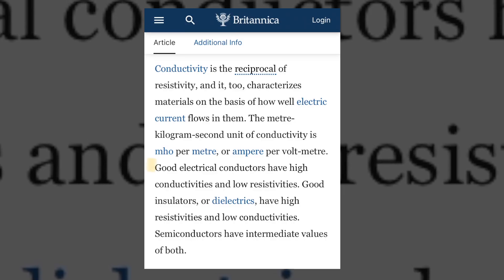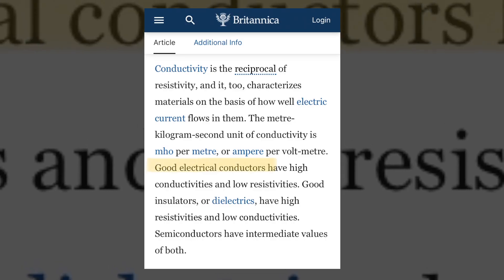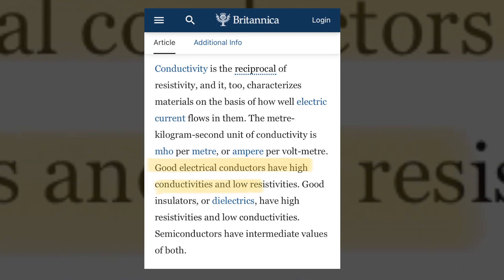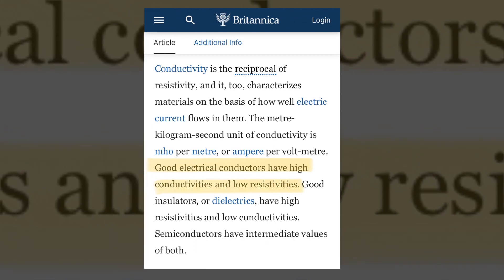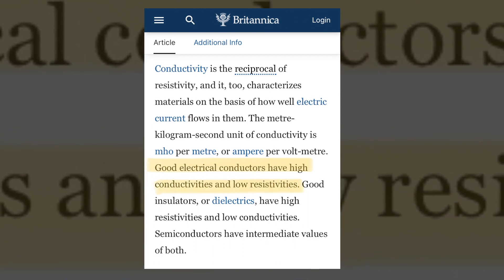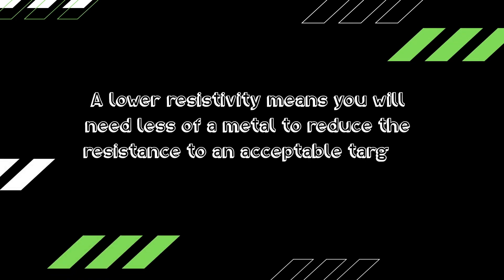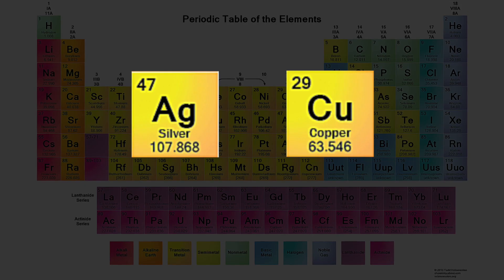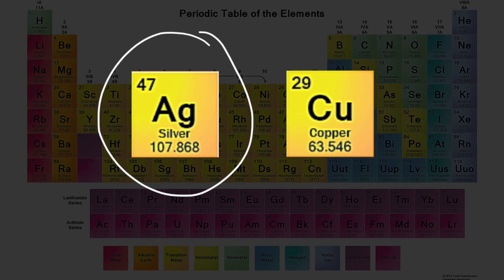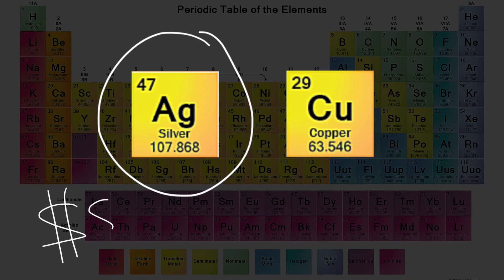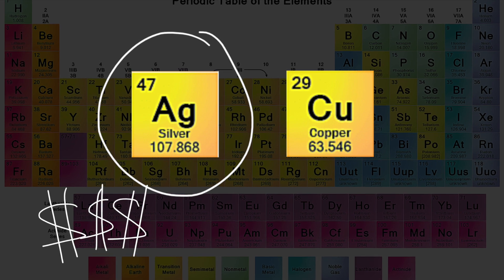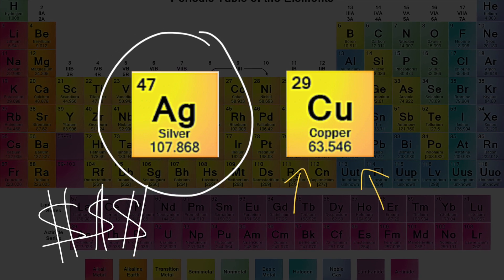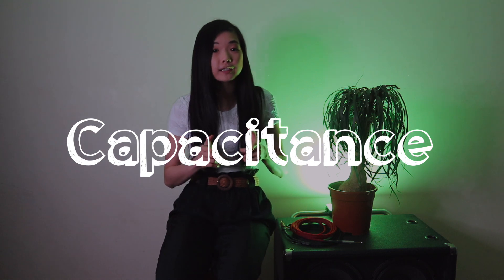There are also different rates of resistivity across metals. According to Encyclopaedia Britannica, good electrical conductors have high conductivities and low resistivity. Lower resistivity means you need less of a metal to reduce resistance to an acceptable level. Although silver has low resistivity, it's expensive, so most cable makers use copper.